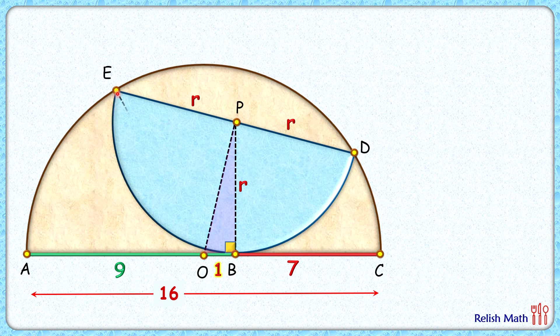If you look carefully, EO is the radius of this brown semicircle, and thus 8 centimeters. Now if you look carefully, ED is the chord and P is the center of that chord.